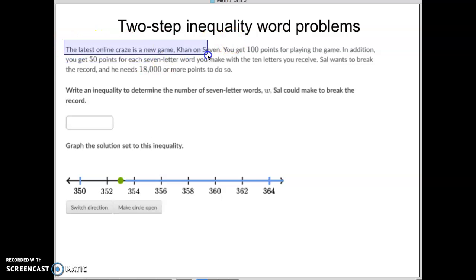The latest online craze in the new game, Con on 7, you get 100 points just for playing the game. So if you think about that, it's 100 points just for playing. In addition, you get 50 points for each 7-letter word, so 50x.